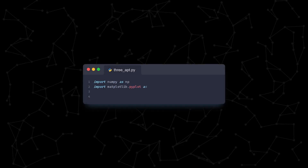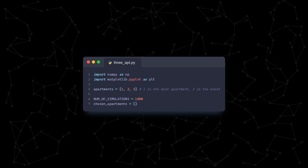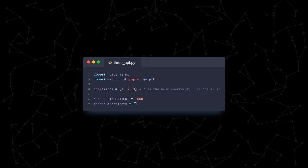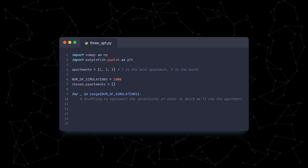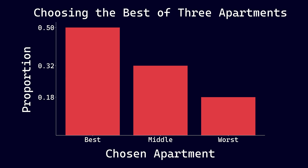An easy way to analyze this solution is to simulate it thousands of times, so let's write a simple Python script to do so. The code I'll be showing on screen is a little more intuitive to understand but not the most optimized — I'll link all the code from this video along with some more optimized versions down below. After our imports, we create a list of our apartments with one being the best and three being the worst. We then choose how many times we want to run this simulation — the more times we run it, the more accurate our approximations will be. We create an empty list that'll hold which apartment we choose each time. For each run, we shuffle the order of the apartments and choose the second one if it's better than the first; otherwise, we choose the last one. After graphing these results, we see that we chose the best apartment 50% of the time. While it's still not 100%, it's much better than if we just chose randomly, which would yield only a 33% probability of choosing the best one.